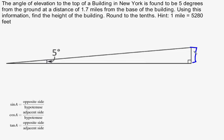So suppose this is my New York building, and we are trying to find its height. In fact, let me label this side of the triangle H for height. And we're also given that the distance from where you're standing right here to the building is 1.7 miles.